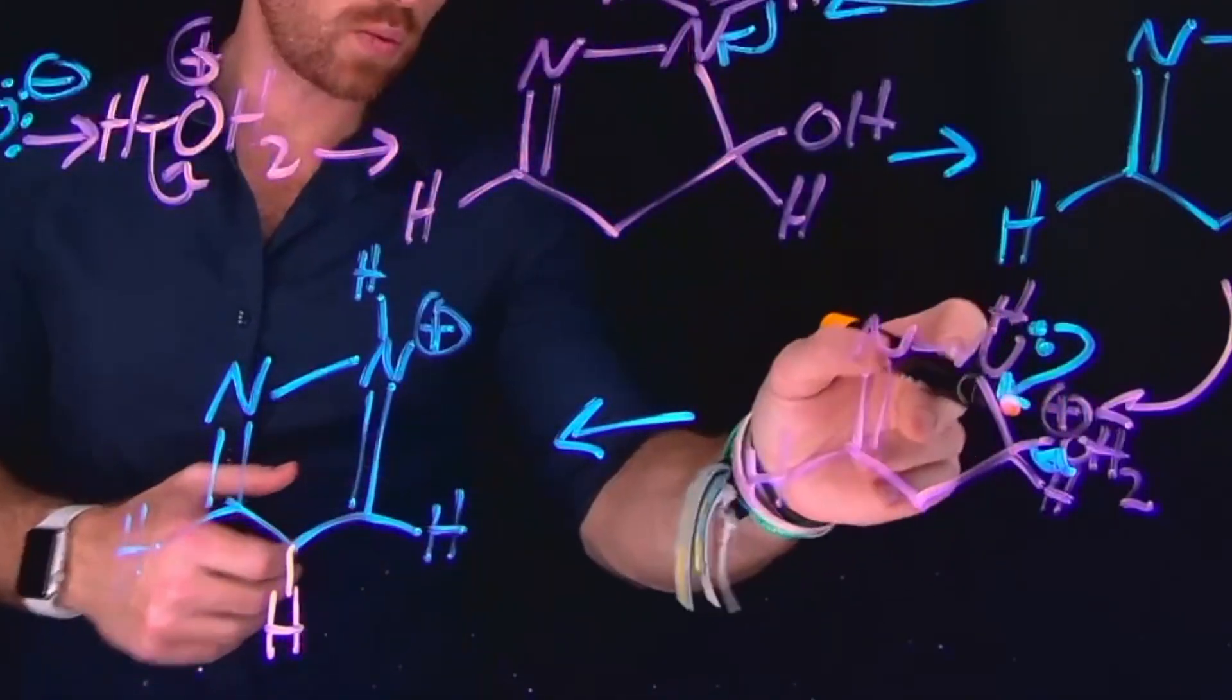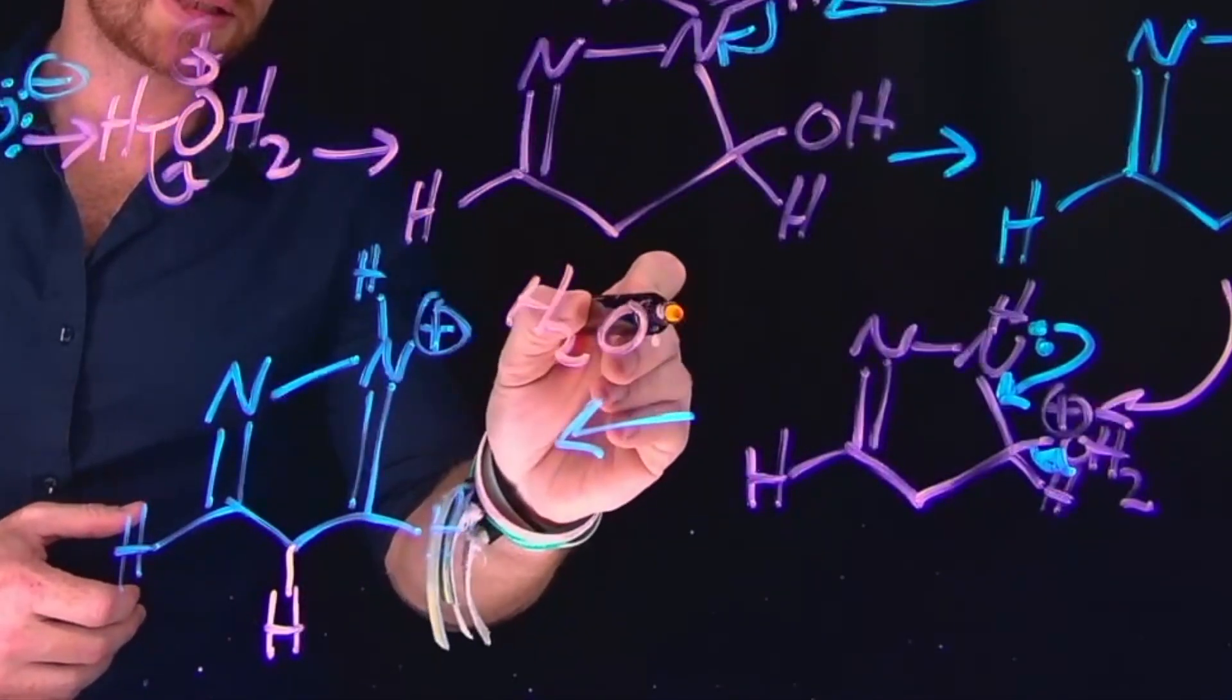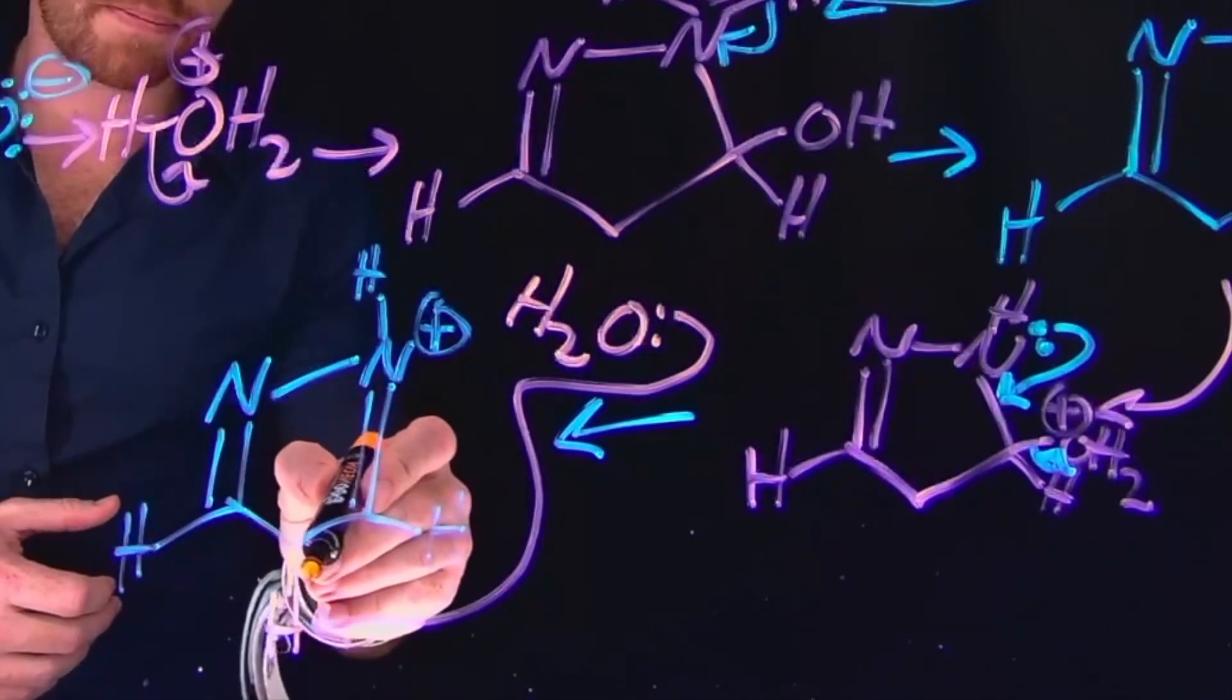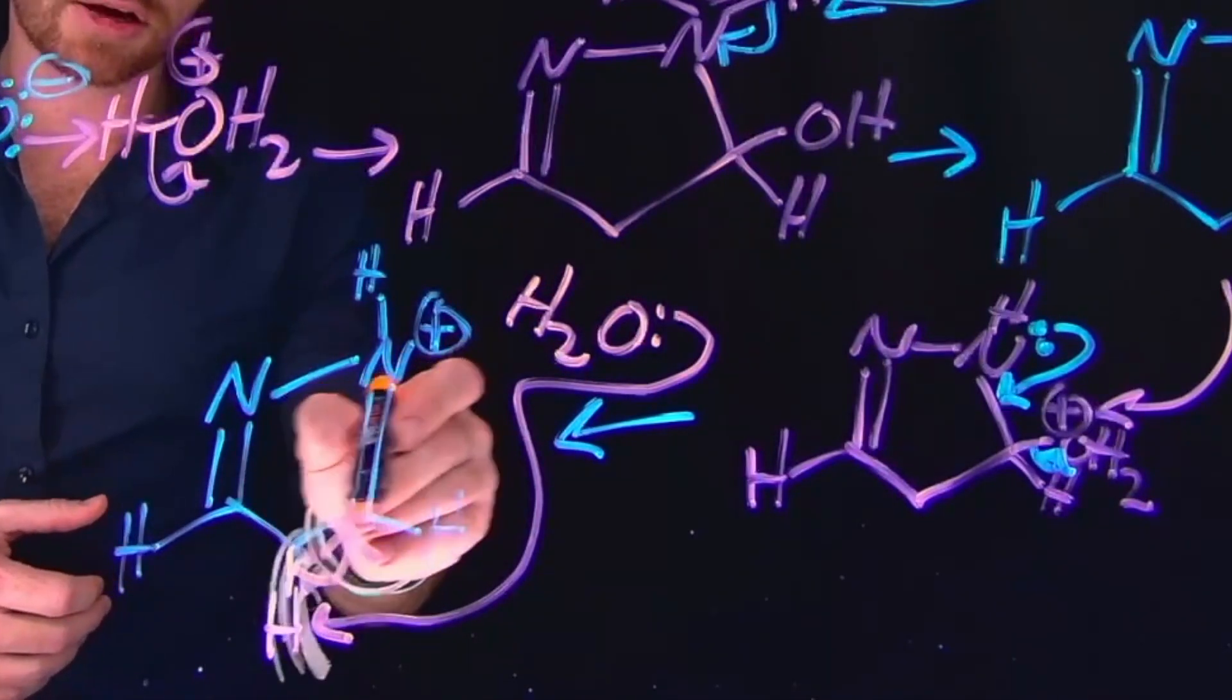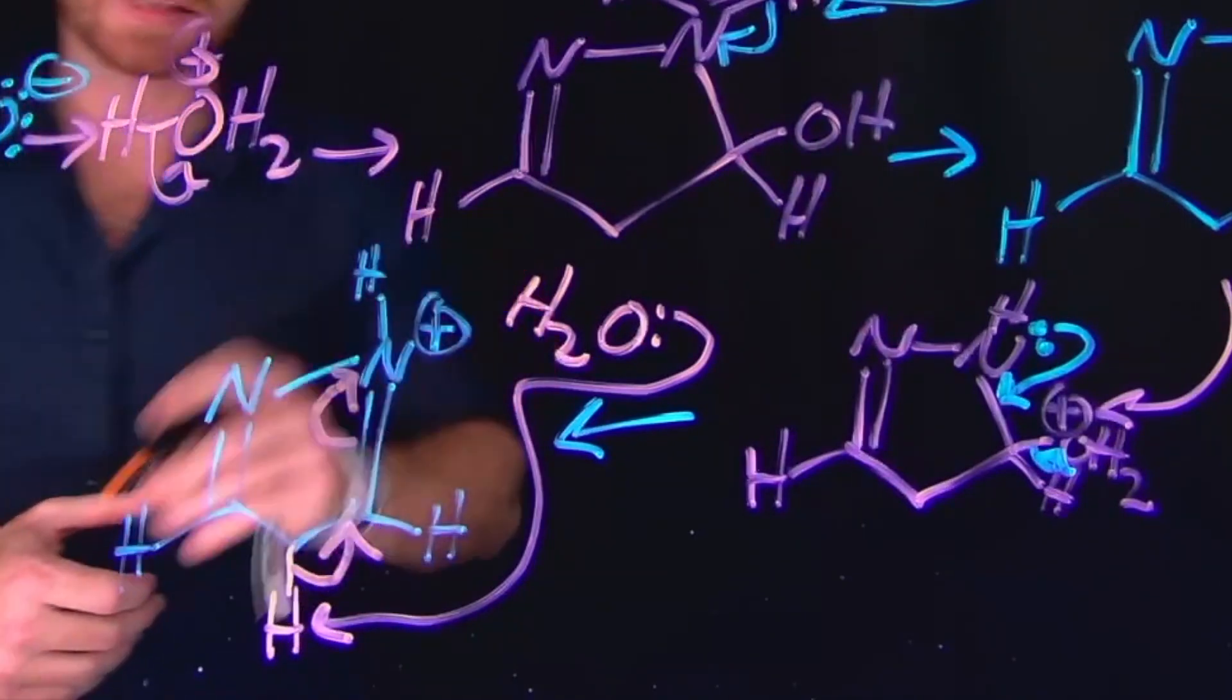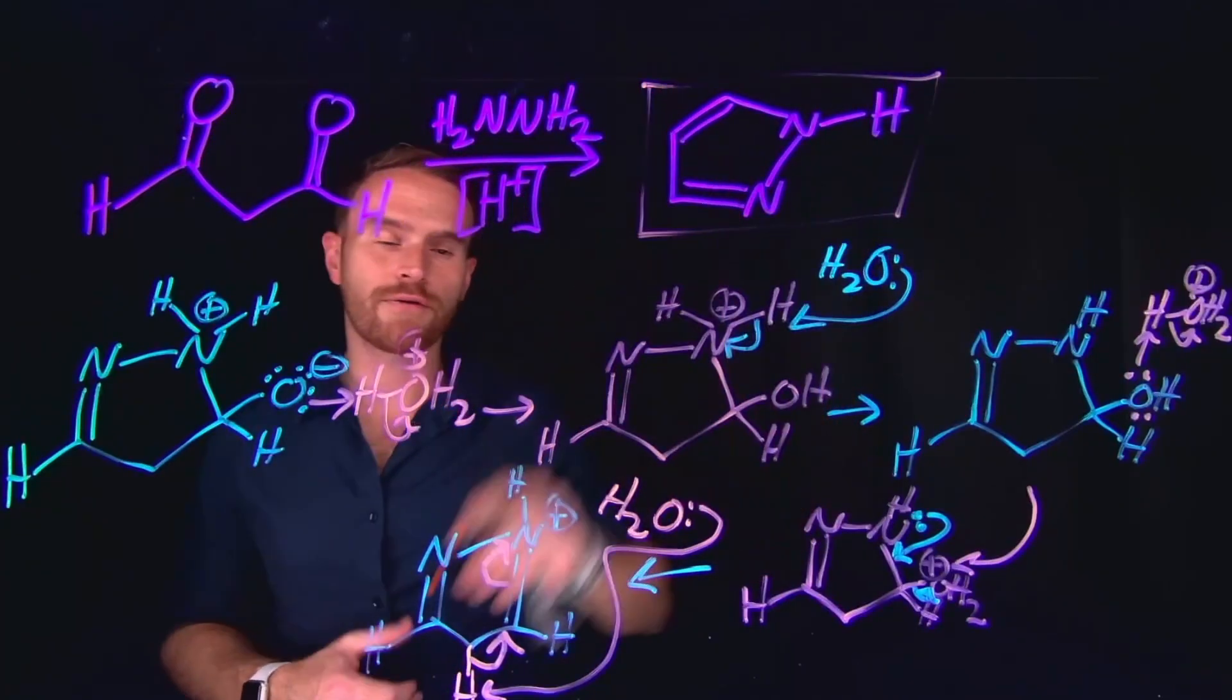And when we generated water at this step, what we've done is we've created a conjugate base, which is strong enough to deprotonate this proton, which will then put its electrons at this carbon to carbon bond, which moves up these electrons to be back as a lone pair on the nitrogen, which is actually the structure of our final product.